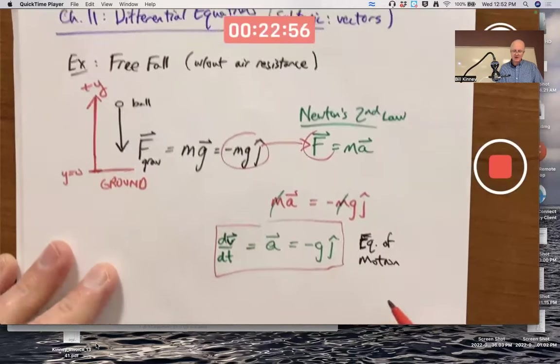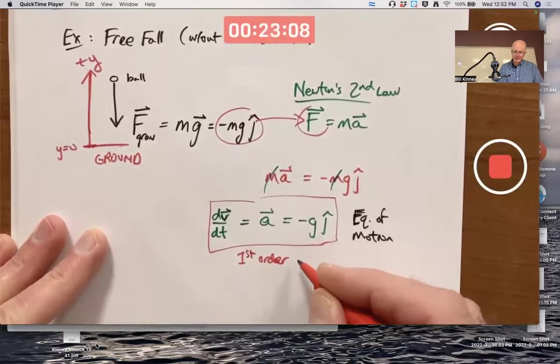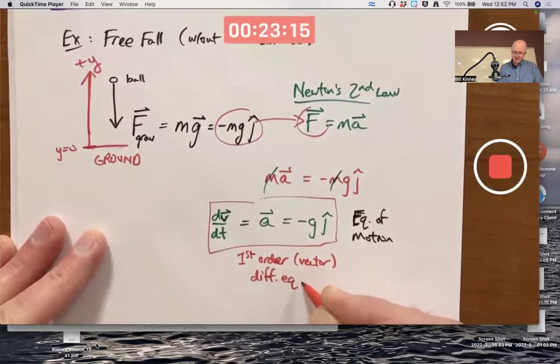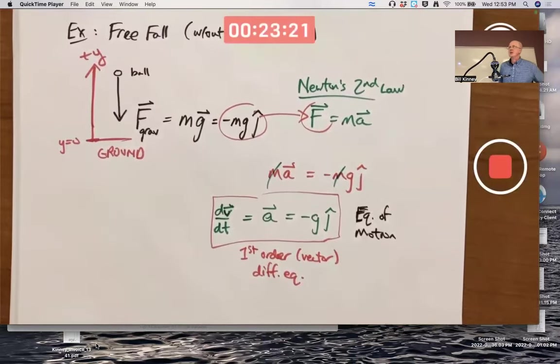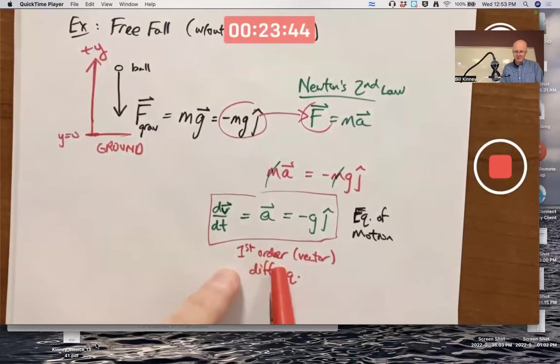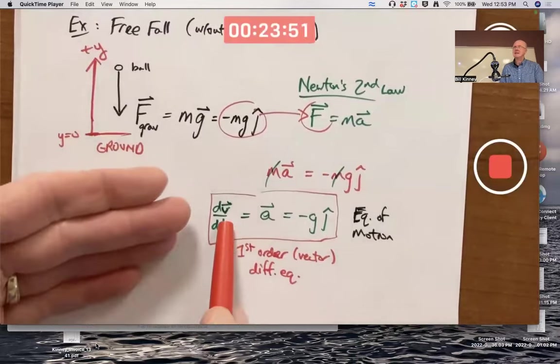There's a differential equation. This equation is what you would call a first order vector differential equation, or Diffy Q for short. Differential equations are often affectionately called Diffy Qs. They're also sometimes called ODEs if they involve ordinary derivatives, and PDEs if they involve partial derivatives. What's first order mean? It means it involves a first derivative of some unknown function. The velocity is an unknown function of time.